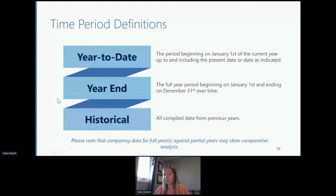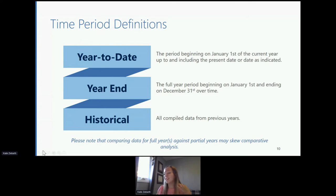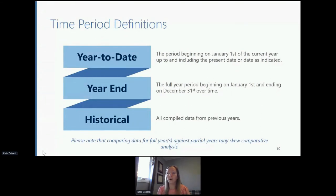Our historical time frame refers to all available data from previous years — in this case, shootings from 2004 up to 2020. The reason we use these different time frames is that comparing partial data to full-year data could skew comparative analysis results. So we would not compare year-to-date 2021 to the entire year of 2020. This approach is also used in practice at the divisions when making decisions.